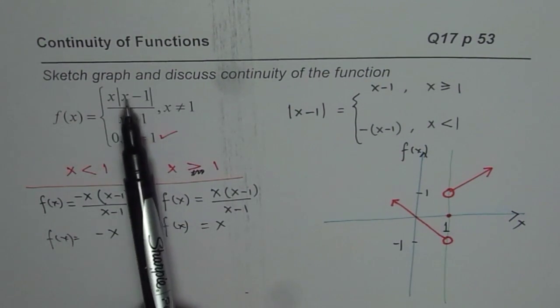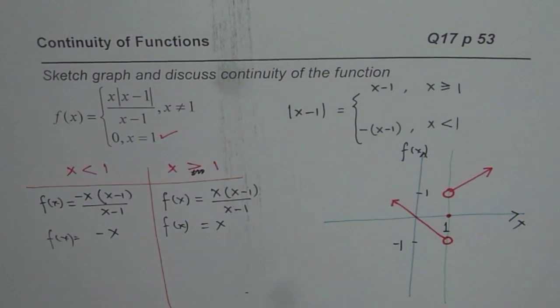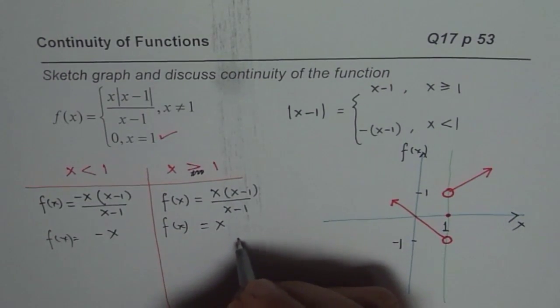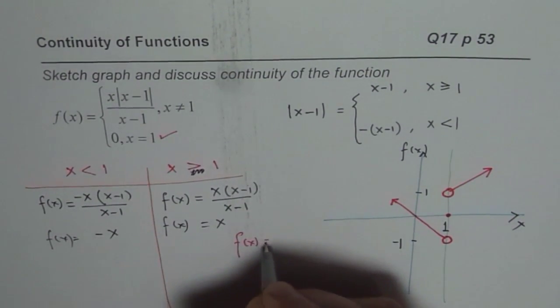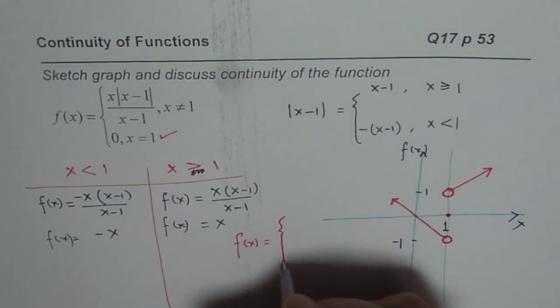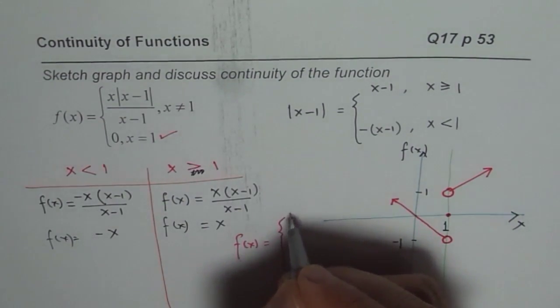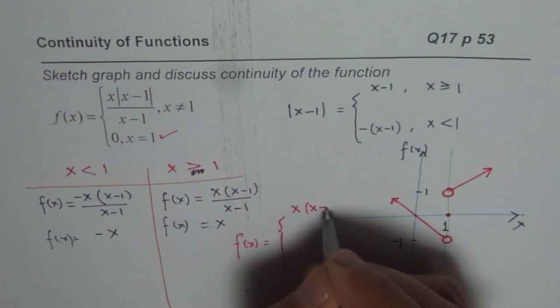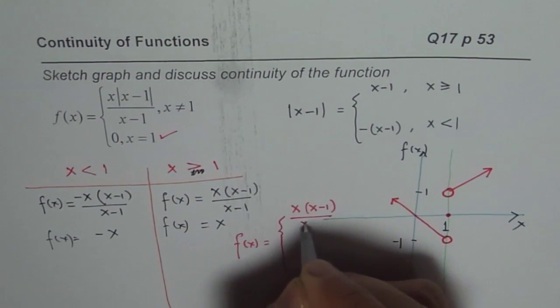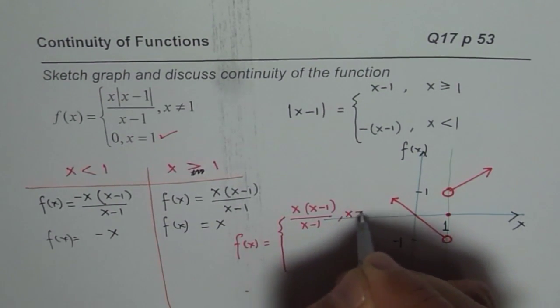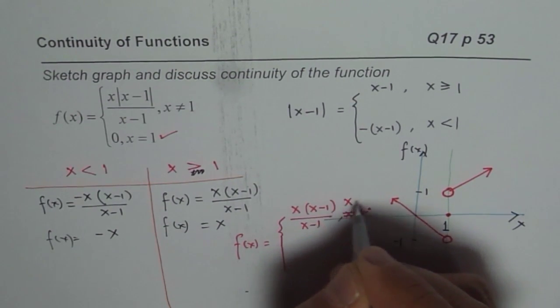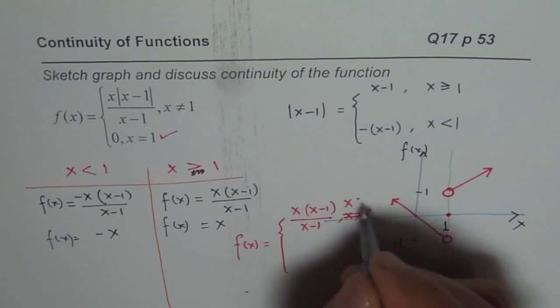So whenever you have an absolute function, split into 2. So basically, you are looking at function now like this. Let's rewrite this function. So we have three parts. So first part says, f(x) equals x times (x-1) over (x-1) when x is not equal to 1. We will change this to when x is less than 1.